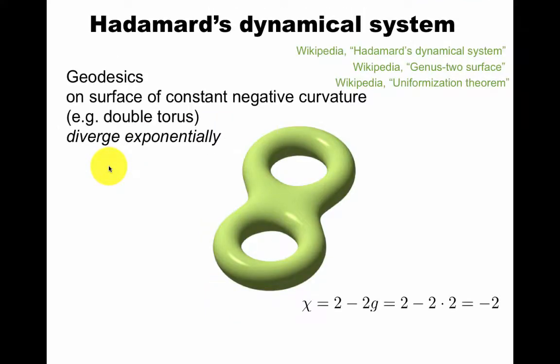In fact, the original example was a mathematician at the Collège de France in Paris. Studied geodesics of a surface of constant negative curvature, like a double torus. It can be given a metric of constant negative curvature. And the geodesics diverge exponentially. So this is very sensitive to initial conditions on this surface of Euler characteristic minus two.